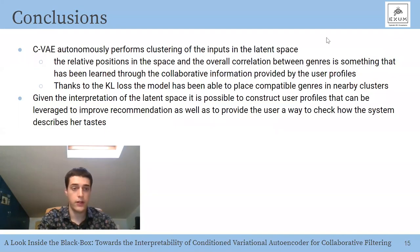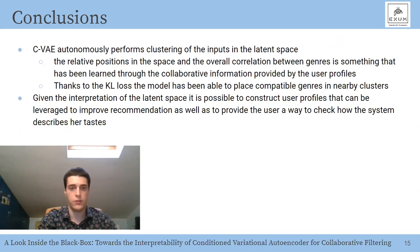In this paper, we discovered that the conditional variational autoencoder autonomously performs clustering of inputs in the latent space. It is not surprising that the model learned which pairs of genres work well together, but the relative positions and overall correlations between genres were learned through collaborative information from user profiles. The KL divergence loss helped the model place compatible genres in coherent clusters. Given the interpretation of the latent space, it is possible to construct user profiles that can be leveraged to improve recommendations and provide users a way to check whether the system reflects their tastes.